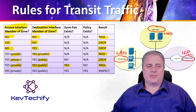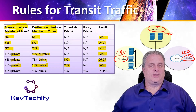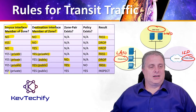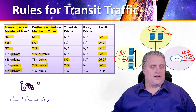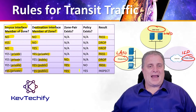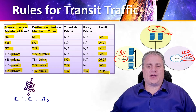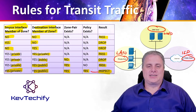See the line above it? That was yes private to yes private, but without that zone pair, we dropped it. Now, yes private to yes public — we have the zone pair, we pass it. And our last option: the interface is part of a member zone going from private to public, there is a zone pair, and there is a policy that exists. Because we have that policy set up, we're going to inspect that traffic.